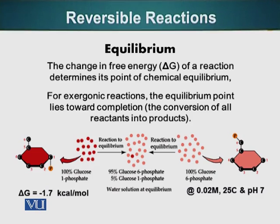If delta G is a positive number, glucose 1-phosphate will not convert into glucose 6-phosphate unless we provide energy to the system. At equilibrium, the number of molecules of glucose 1-phosphate and glucose 6-phosphate is constant — though this does not mean individual molecules cannot change. If one molecule of glucose 1-phosphate converts into glucose 6-phosphate, one molecule of glucose 6-phosphate also converts back. The delta G for this reaction is minus 1.7 kilocalories per mole.